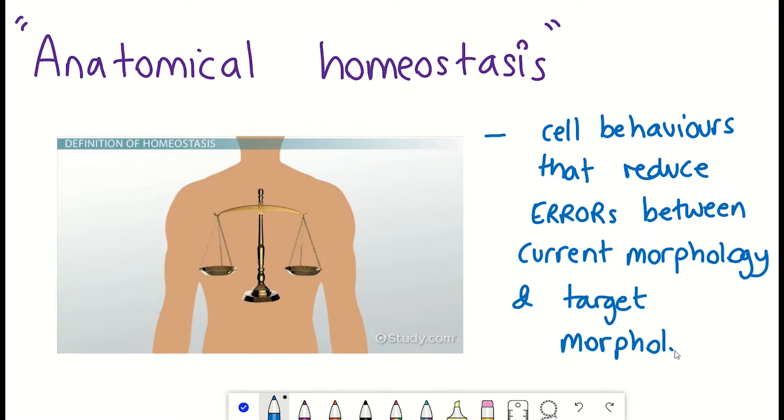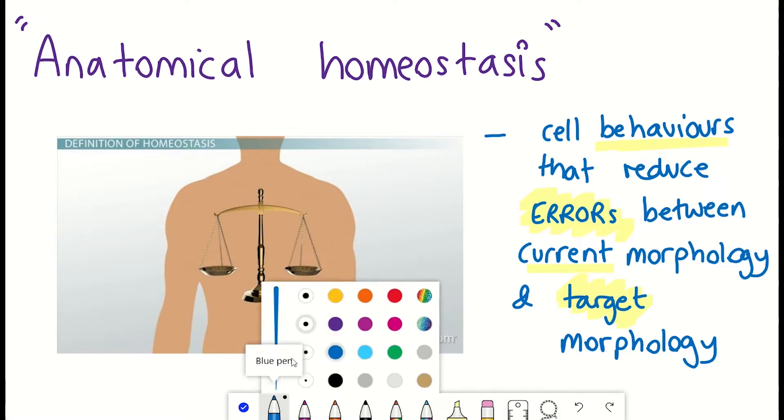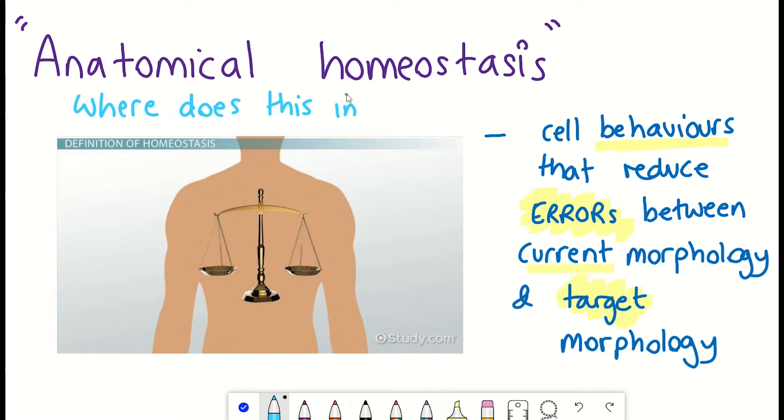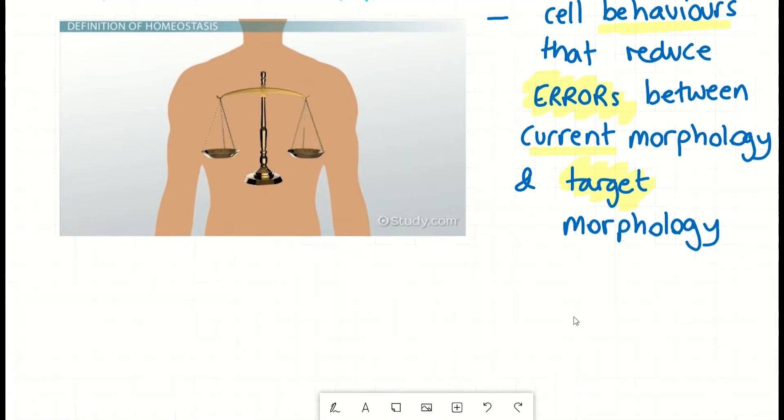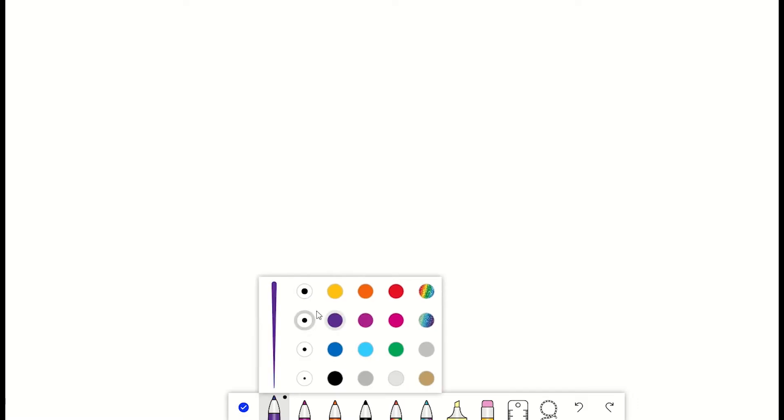But the really important and interesting question is, how is this information specified and read by the cells? For example, what informs the developing organ that it's reached the correct shape and size without further growing to form a tumor? Well, what are the possibilities? I think there's at least three.